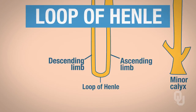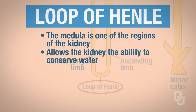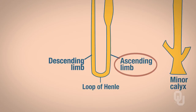When you think about the loop of Henle, think about it in terms of creating an osmotic gradient in the medulla — remember the medulla is one of the regions of the kidney — and it allows the kidney the ability to conserve water. We're going to go ahead and look at both the ascending and the descending limb.